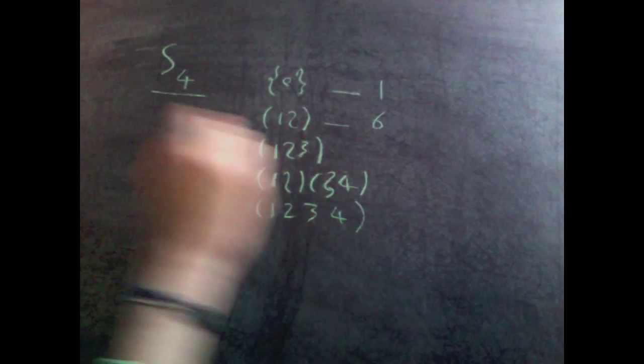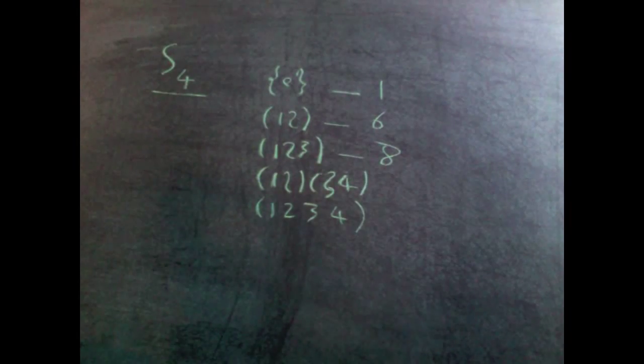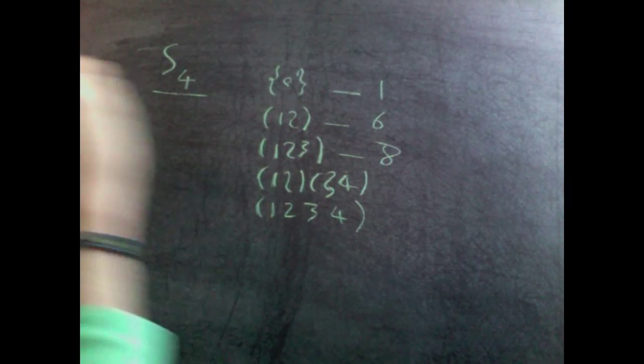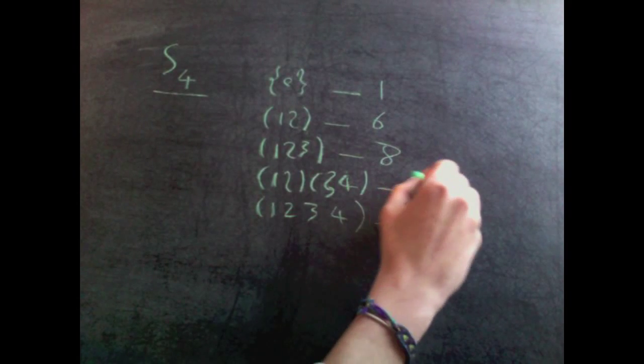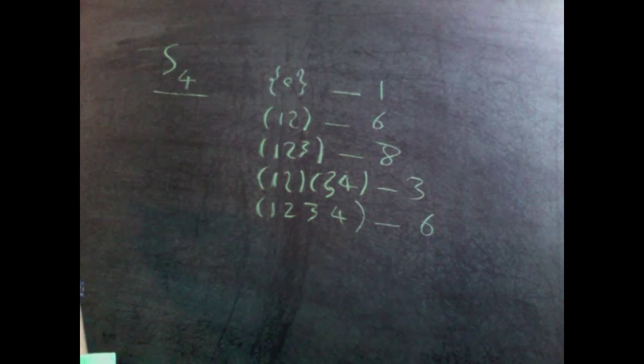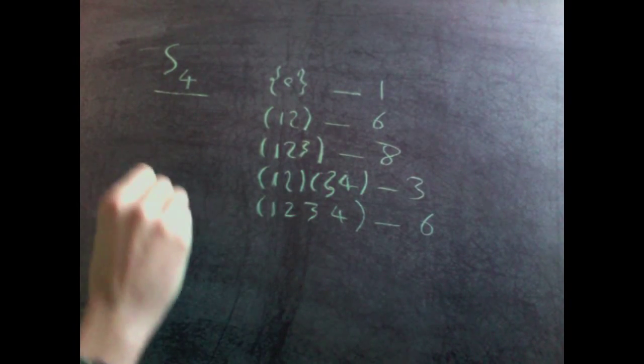There are six two cycles, eight three cycles, six four cycles, and three double transpositions. So we'll write down the class equation.